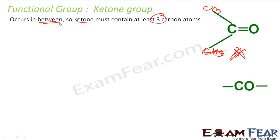The ketone group occurs only in the between. It already has one carbon, and the minimum you can add is CH3 on both sides. So the minimum it can have is 3 carbon atoms — 2 which you add and 1 it already has. It is represented as C=O, or CO; both are the same actually.